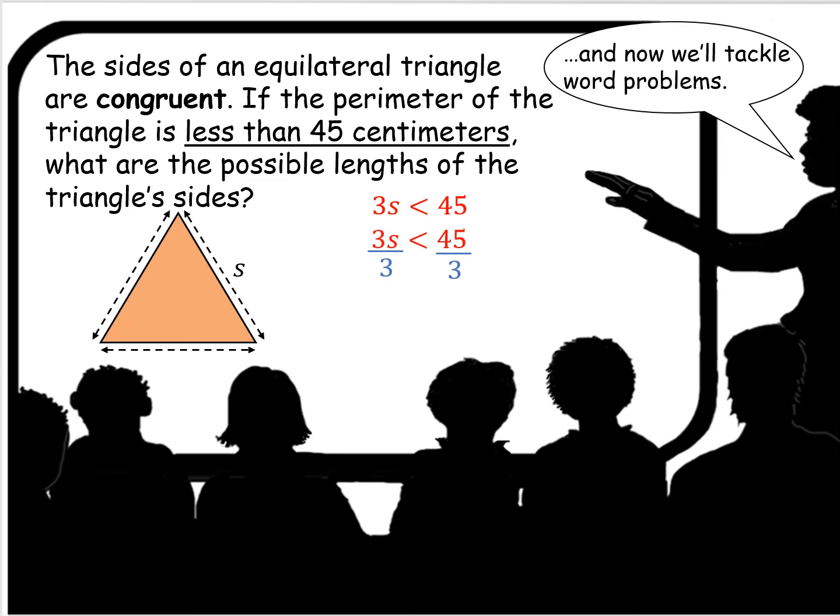Well, perimeter is each side added together. So side plus side plus side or 3s. So 3s is less than 45. We're going to divide both sides by 3 to isolate the variable. So s is less than 15 centimeters.